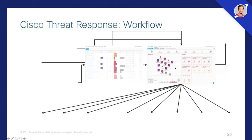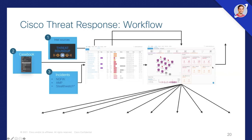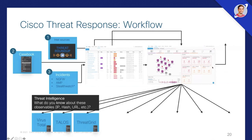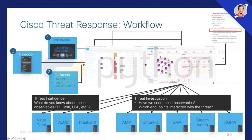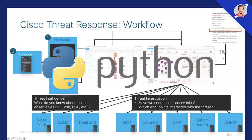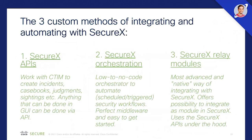A workflow you could use in Threat Response: you can use Intel sources, Casebook, or incidents as the source of your investigation. From there, SecureX will pull information from all kinds of threat intelligence sources as well as local threat intelligence seen in your environment. Finally, you could take actions like blocking something, all from Threat Response. And because it's API-first built, we can also do all of this from Python.